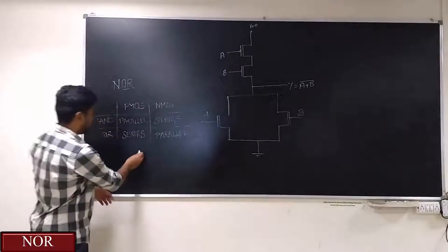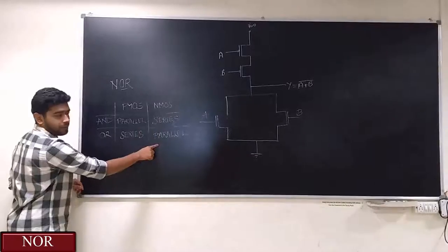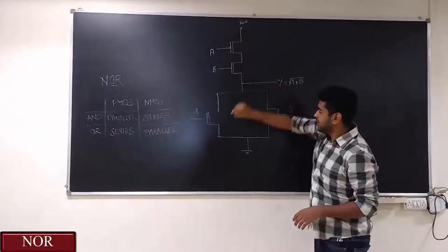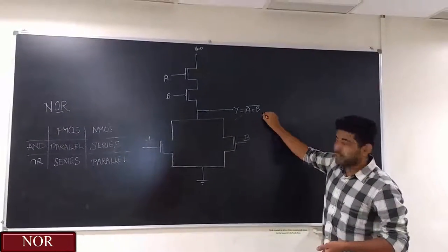As we know from the table for NOR operations, PMOS is kept in series and NMOS is kept in parallel. So as we see, the PMOS is in series and NMOS is in parallel. This is the output I obtained.